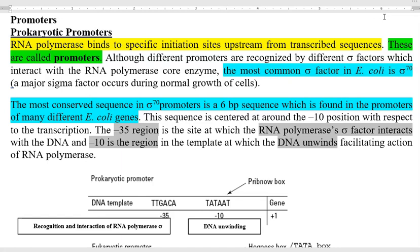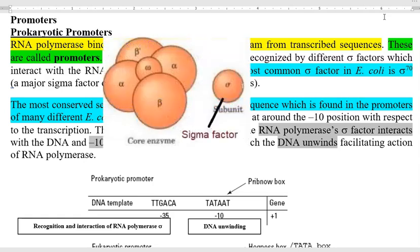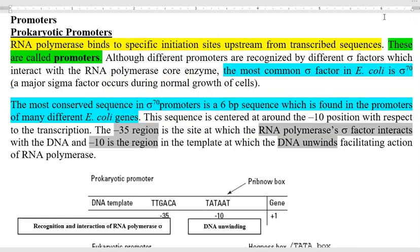Different promoters are recognized by different types of sigma factors, which interact with the RNA polymerase core enzyme. First, you need to understand what a sigma factor is and what the RNA polymerase core enzyme is. The RNA polymerase core enzyme is composed of a few subunits, and a sigma factor will interact with those subunits. Only after that interaction can it join the promoter site of a gene. The most common sigma factor in E. coli is sigma 70, which is the major sigma factor during normal growth of cells.